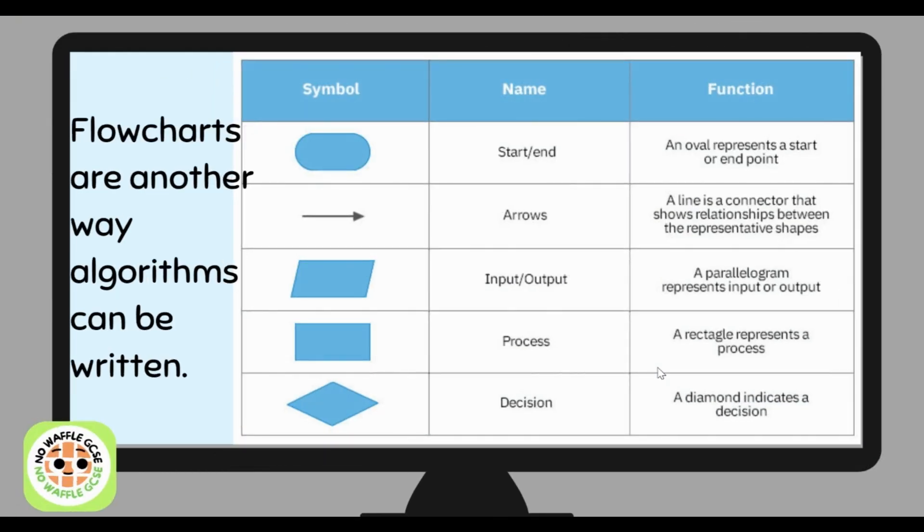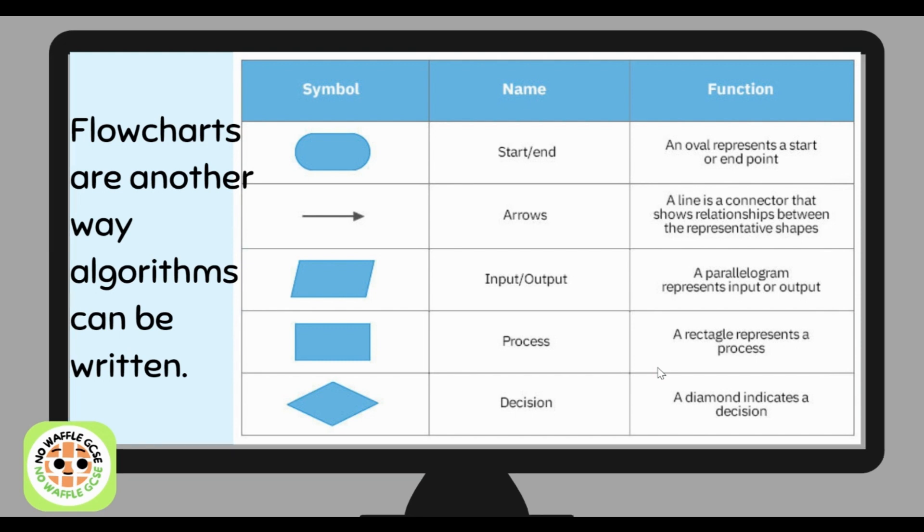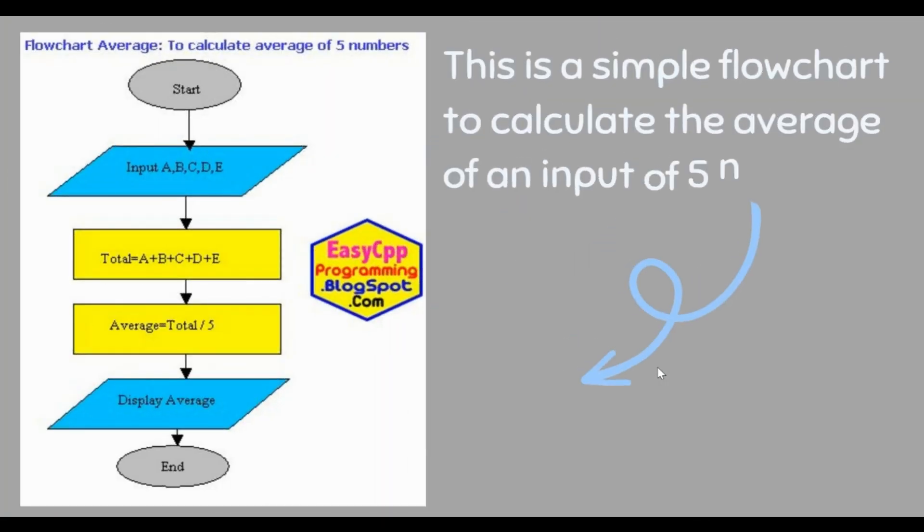Now, flowcharts are another way algorithms can be written. You can see there's different symbols and shapes here. An arrow directs you from one shape or instruction to another. You've got the almost circle-looking thing which is a start and end. You've got the parallelogram which is the input and output, the rectangle which is the process, and the diamond which is a decision.